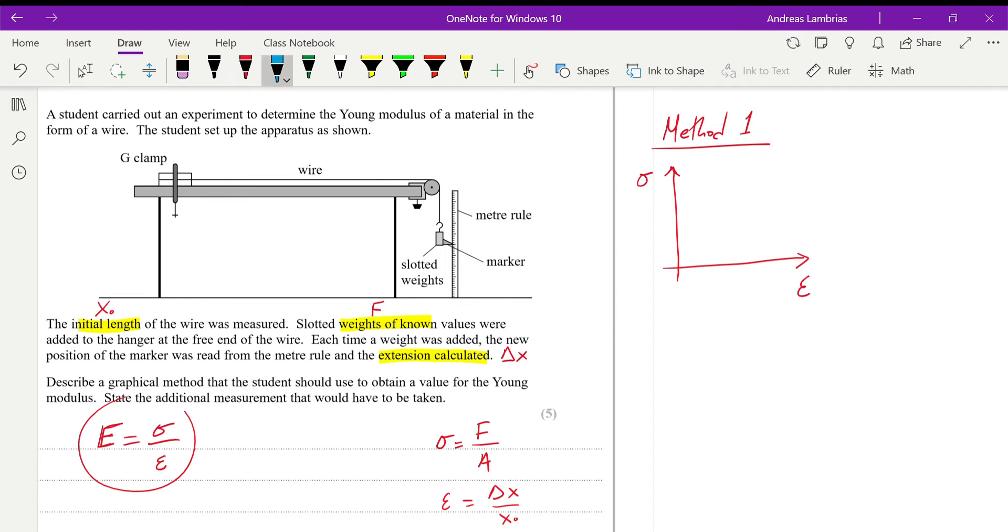So, it will give me a straight line, and then I can use the gradient of this line to find the Young modulus. But, what do I need to do in order to calculate stress and strain? So, from this equation, we are given the force, the weights I added. We know that. We don't know the area of the wire, the cross-sectional area of the wire. We know the extension, we can calculate the extension, and we also know the initial length. So, the only missing information here is the cross-sectional area of the wire.